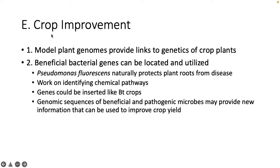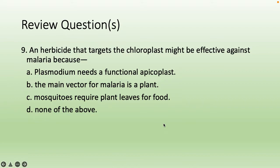Crop improvement: model plant genomes provide links to the genetics of crop plants. We find beneficial bacterial genes and insert them into crops — for example, taking Pseudomonas fluorescens, which naturally protects plant roots from disease, and working on chemical pathways to insert genes to help reduce disease. These can be inserted into crops to improve overall crop yield. An herbicide targeting the chloroplast might be effective against malaria because both share the apicoplast structure — plasmodium needs a functional apicoplast to infect the host cell. That does it for Chapter 24.